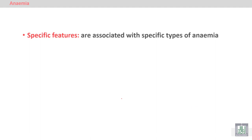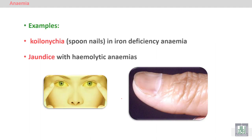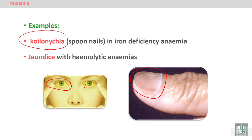Specific features are associated with specific types of anemia. For example, koilonychia, or spoon-shaped nails, shows concavity of the nails and occurs commonly in iron deficiency anemia. Jaundice, or yellow discoloration of the sclera, can be seen as a yellow sclera instead of the normal white color, and occurs in hemolytic anemia. From the specific sign, we can identify the type of anemia.